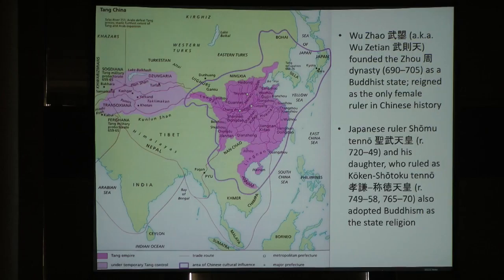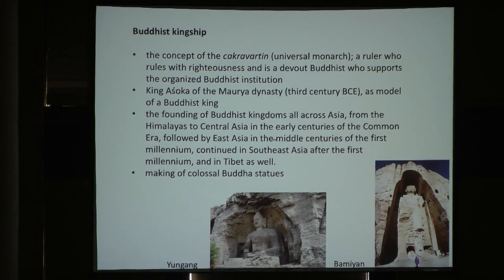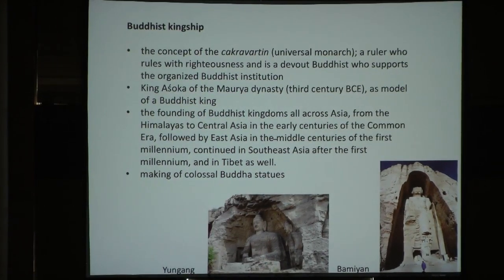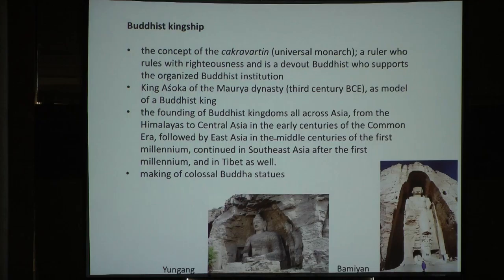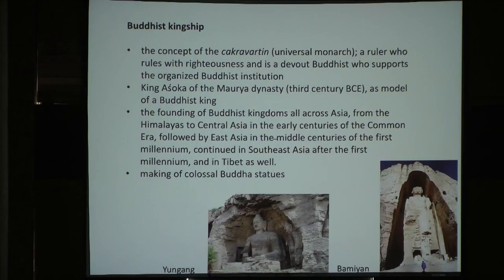To a lesser extent, the kingdoms of Korea also experimented with the notion of Buddhist kingship. Early discourses on Buddhist kingship focused on the concept of the Chakravartin, or universal monarch—a ruler who rules with righteousness and is a devout Buddhist who supports the organized Buddhist institution. In India, the legendary King Ashoka of the Maurya dynasty, who converted to Buddhism after a very bloody battle, became the model of a Buddhist king. The rhetoric of Buddhist kingship and the Ashoka legend had important influences in Asian history, leading to the founding of Buddhist kingdoms from the Himalayas to Central Asia, then East Asia, Southeast Asia, and Tibet.